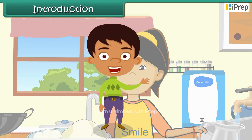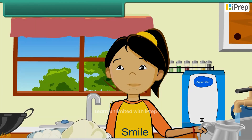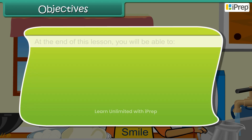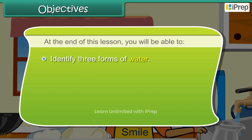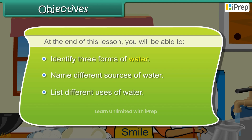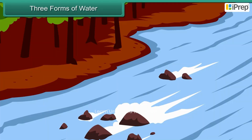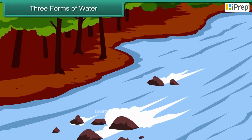In this lesson you will learn about water. At the end of this lesson you will be able to: identify three forms of water, name different sources of water, list different uses of water, and describe the water cycle.